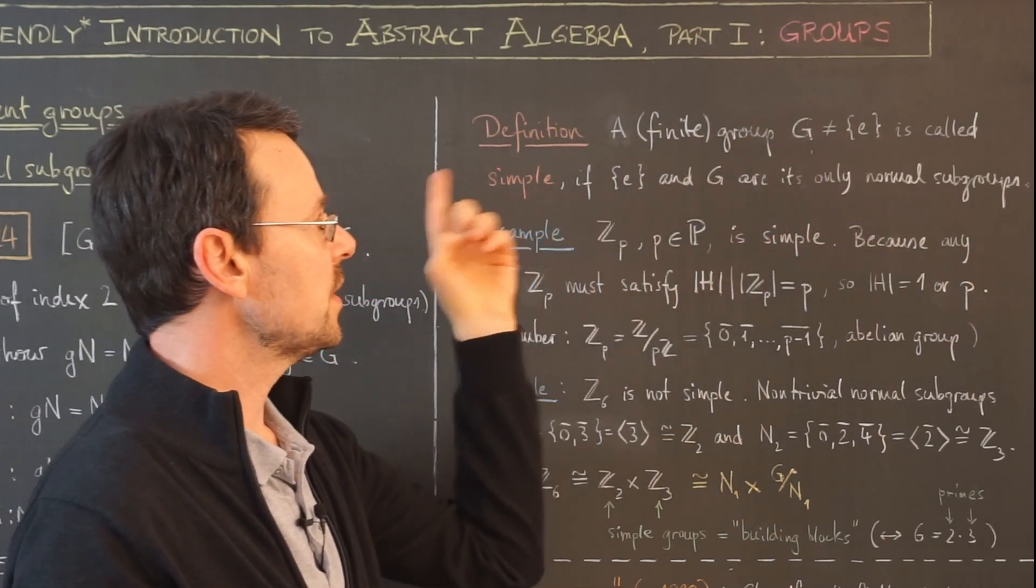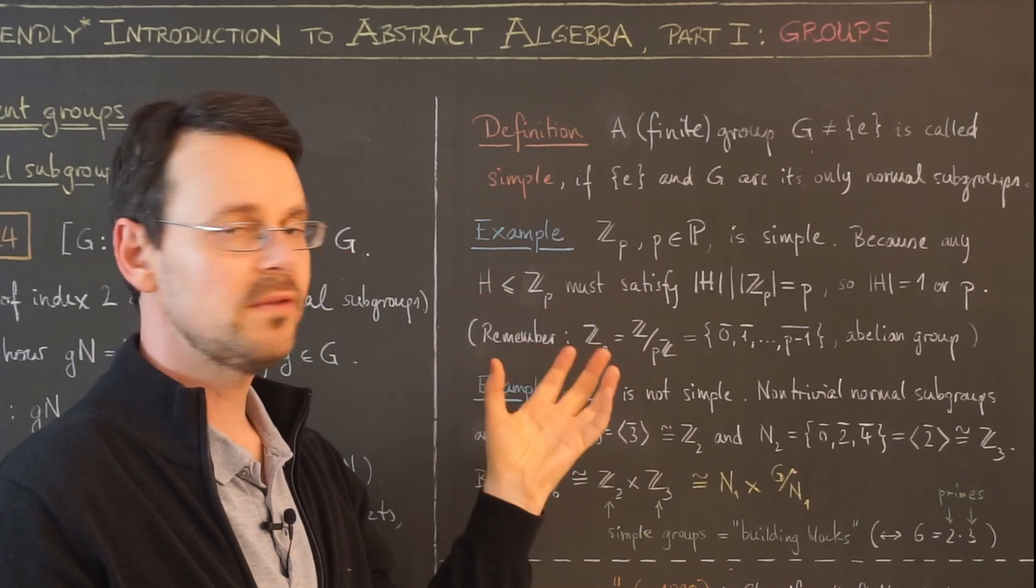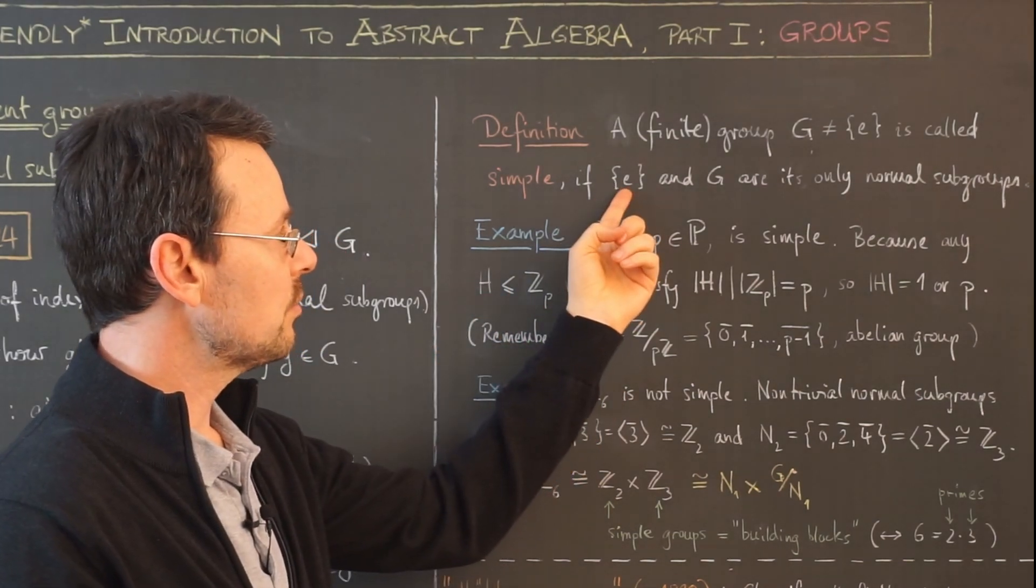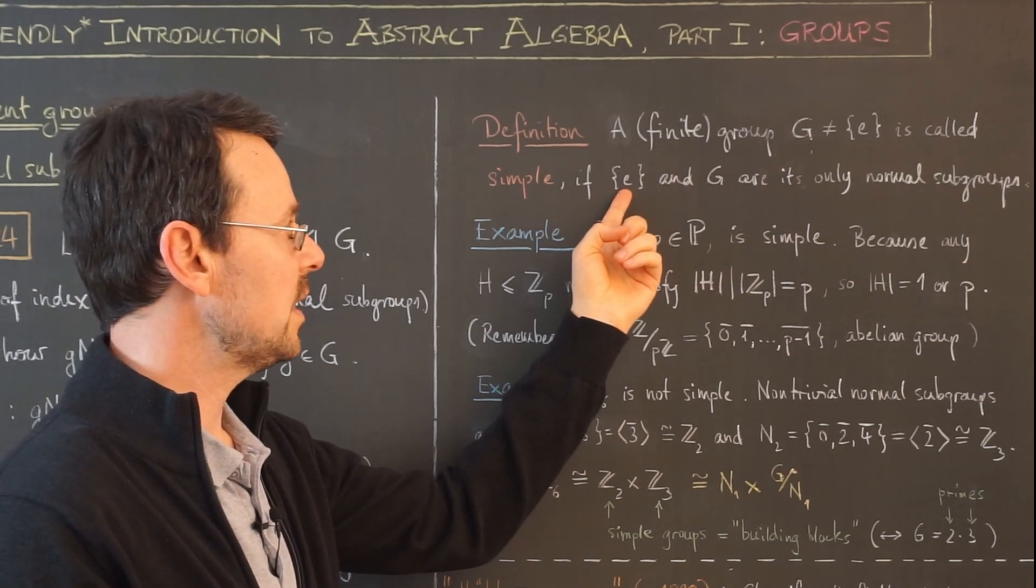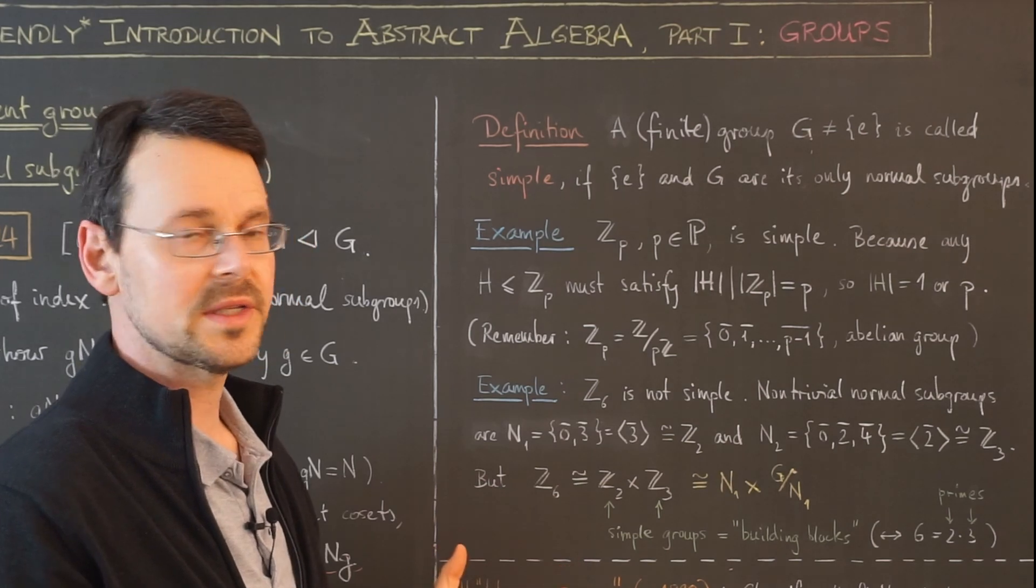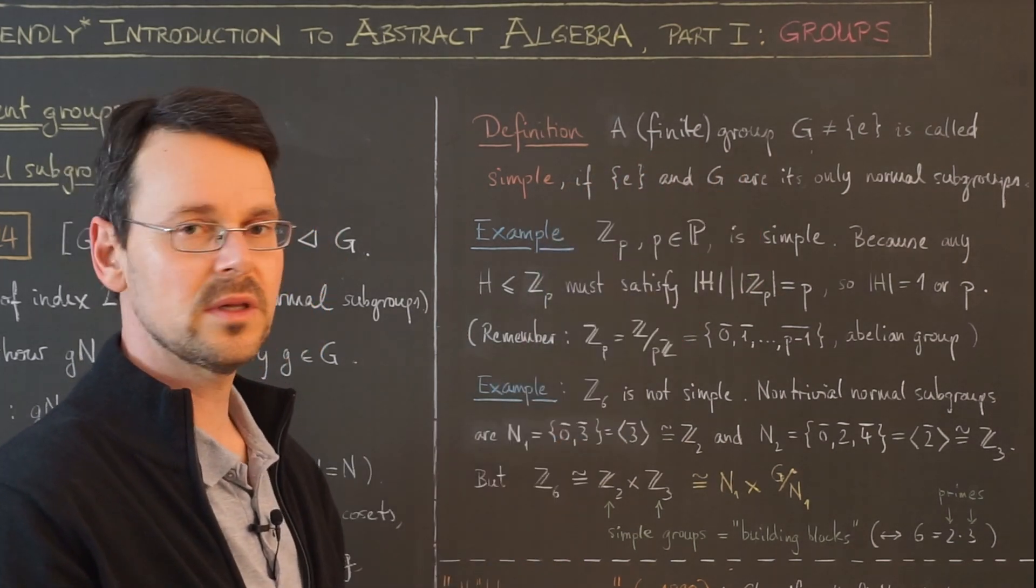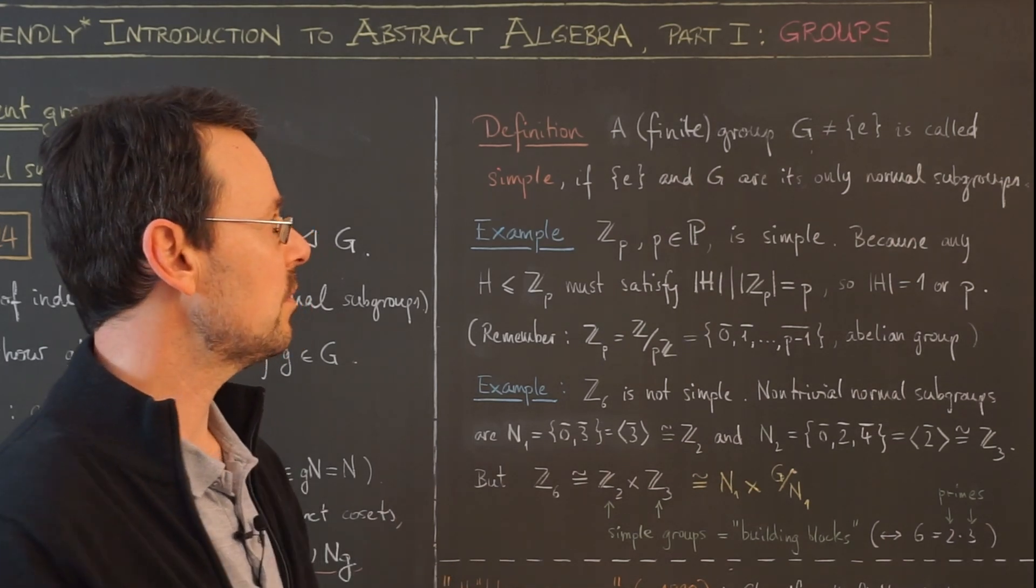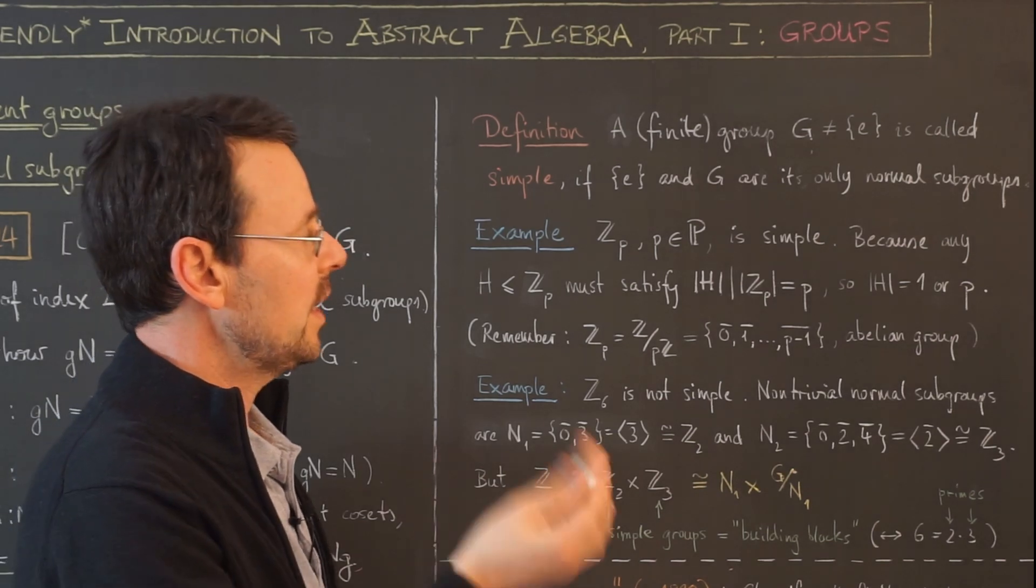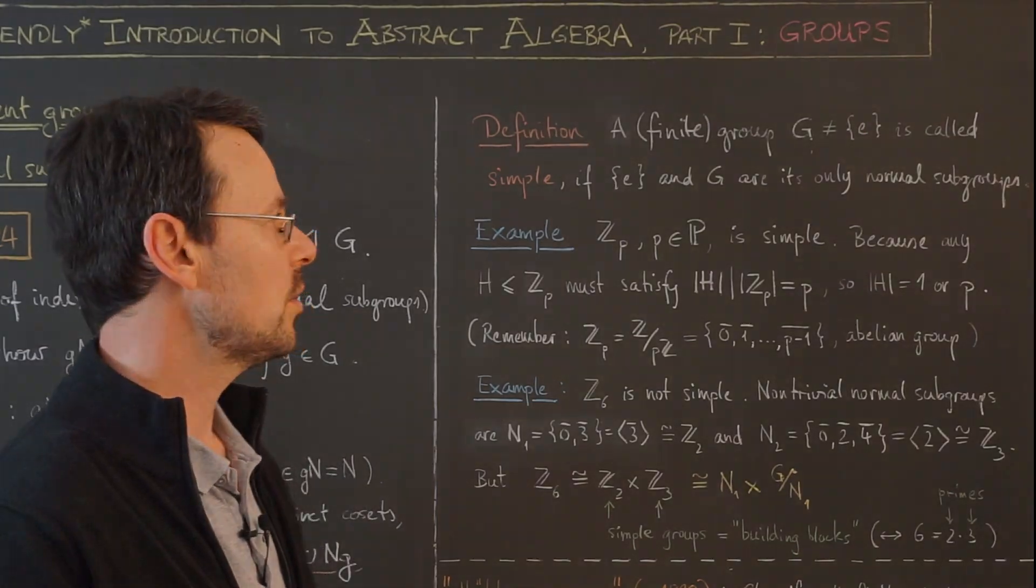Such a group is called a simple group if it has only the trivial normal subgroups, meaning this subgroup here that consists only of the identity and the whole group itself are the only normal subgroups of G. That these are normal subgroups is trivial, but you might as well think about it for 5 to 10 seconds. Anyway, such a group with this property is called a simple group.